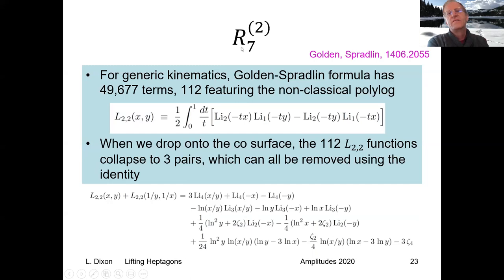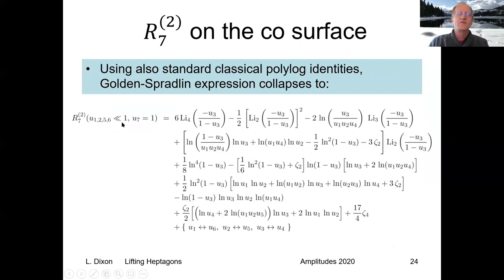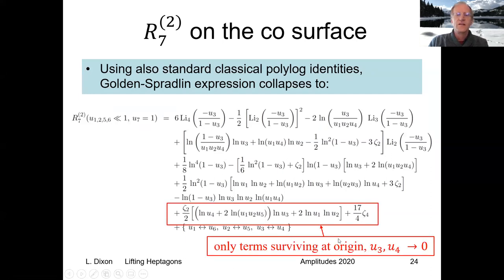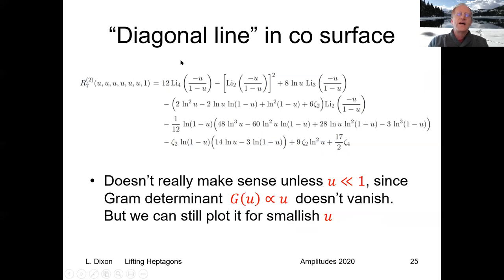Let me mention this function, which I showed plotted earlier by Golden and Spradlin. For generic kinematics, this formula has 49,677 terms and 112 of them have a non-classical polylog L22 in it. Now we drop onto this surface and everything simplifies enormously. These 112 L22 functions collapse to three pairs for which there's an identity. This more or less had to happen, but they all reduce down to classical polylogs. So this is the formula you get when you're on this CO surface and it's quite simple. If we were to go to the origin, it would simplify even more. When you take U3 and U4 to zero, you find all these terms drop out, except for these guys. You'll notice that this is quadratic in logarithms, which is nice.